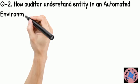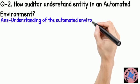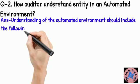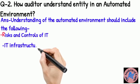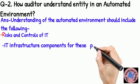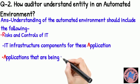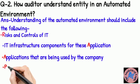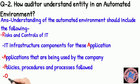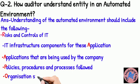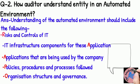Question 2: How does an auditor understand an entity in an automated environment? This covers IT infrastructure components, applications being used by the company, policies, procedures and processes followed, and organizational structure to guide reporting — risk and control. The mnemonic is: infrastructure, application, policies/procedures, and organizational structure and governance.